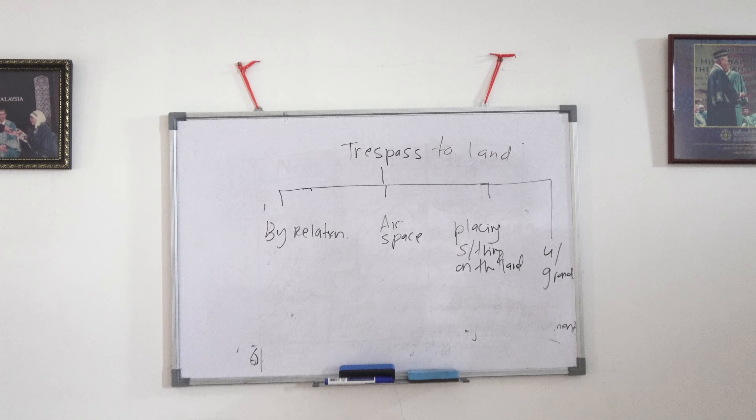There are a few cases on trespass to the airspace that I will discuss in another lecture. As of now, I have introduced the three main types of trespass, the subtypes of trespass to land, and covered trespass by relation and trespass to the airspace. In the coming video, I will discuss cases on trespass to the airspace — how it may occur and happen. Thank you very much. Assalamualaikum.